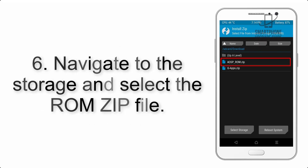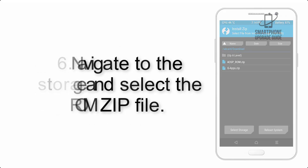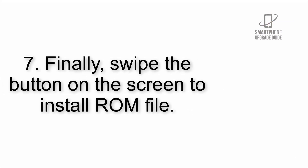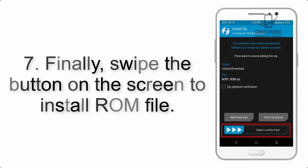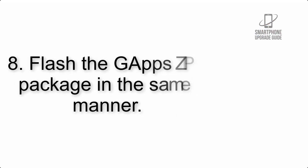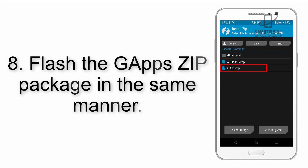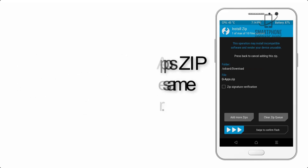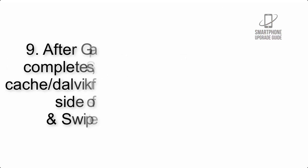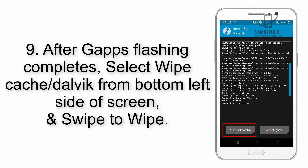Step 6: Navigate to the storage and select the ROM zip file. Step 7: Swipe the button on the screen to install the ROM file. Step 8: Flash the GApps zip package in the same manner.